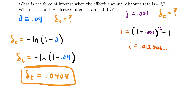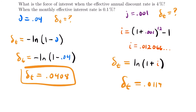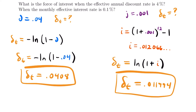Now we use the formula for the force of interest: delta equals the natural log of (1 plus I). Plugging in our value of I — remember to save this full value in your calculator without rounding — we find that the force of interest delta equals 0.011994. That is the final answer for a monthly effective interest rate of 0.1%. That's all the examples I had for this video. If you have any questions, feel free to leave them in the comments. I'll see you next time.